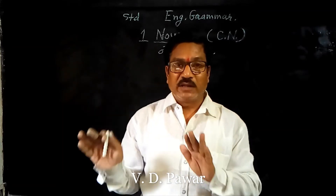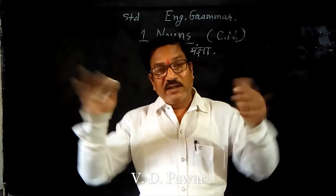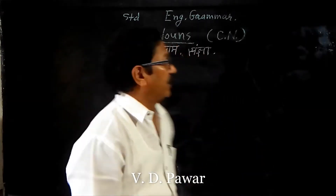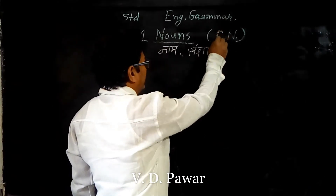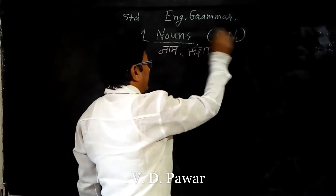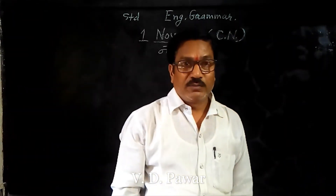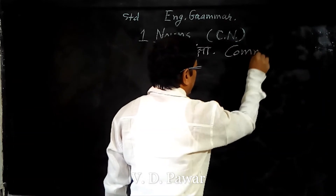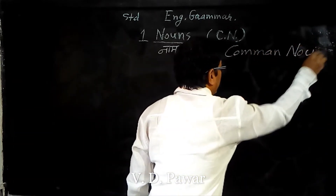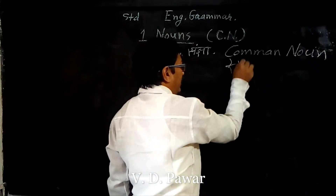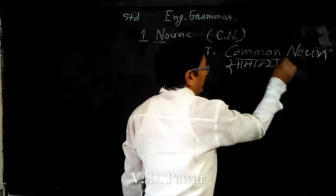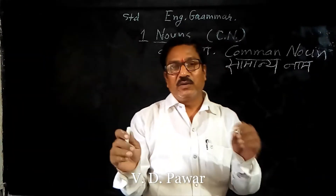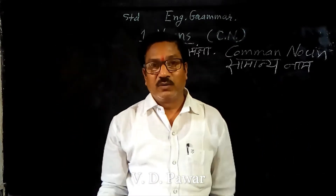किसी भी वस्तु, व्यक्ति, स्थान, पदार्थ — दिखाई देने वाला और दिखाई न देने वाला भी — though it may be visual or invisible, they are called nouns, उसे हम Noun कहते हैं। अब Noun में C.N. — CN का मतलब Common Noun। Common noun का मतलब है सामान्य नाम। General name given to anything — वह है Common Noun।